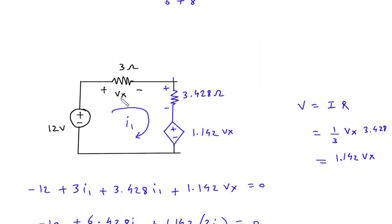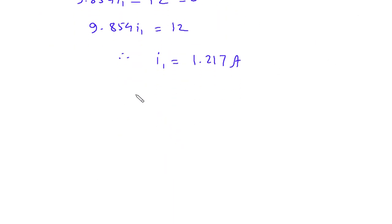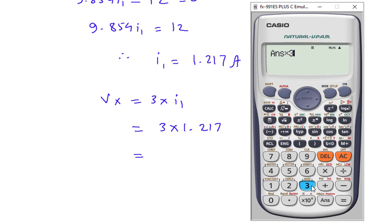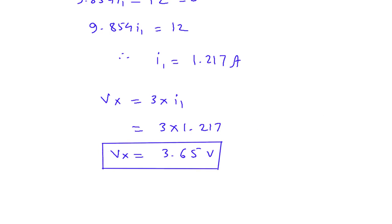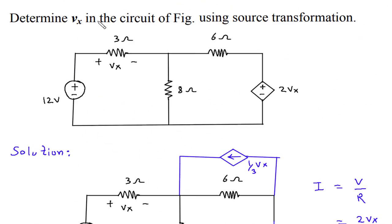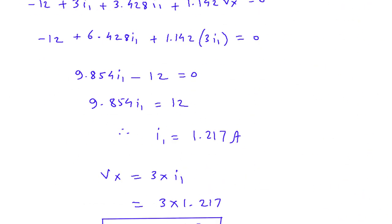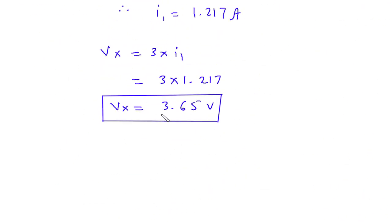We have to find Vx. Vx is equal to 3 times I1, so Vx equals 3 times 1.217, which gives 3.65 V. This is the value of Vx that we had to find using source transformation.